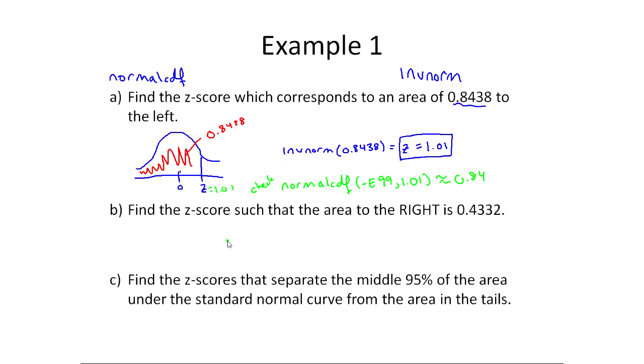What about area to the right? I just told you that this deals with area to the left. Let's draw the picture first. We're dealing with z, so it's normal with mean of zero. Area to the right is 43%. The area to the right of zero is 50, so we've got to be a little further over than that, so a little smaller than 50%. So this right here would be 0.4332.